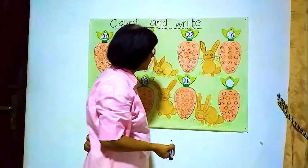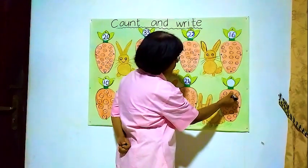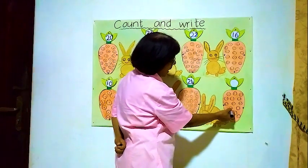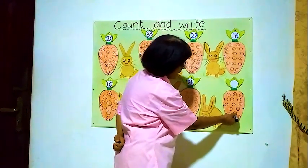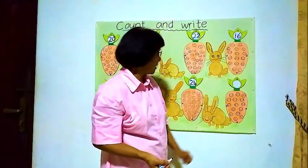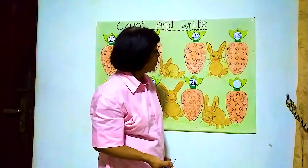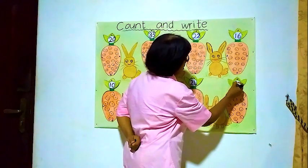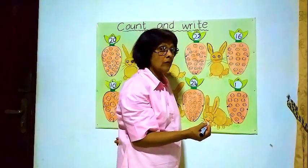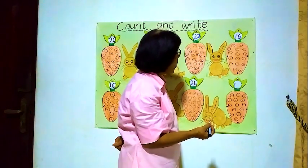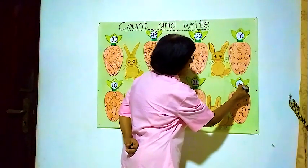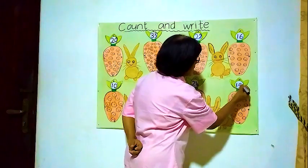Now this is the last one. We'll count from here. One, two, three, four, five, six, seven, eight, nine, ten, eleven, twelve, thirteen, fourteen, fifteen. Fifteen balls inside this carrot. How to write fifteen? One and three is thirteen. One and four is fourteen. To make fifteen, we write one and five. One and five makes fifteen.